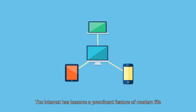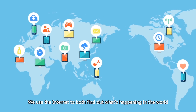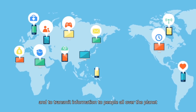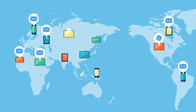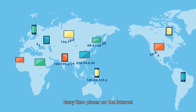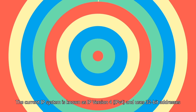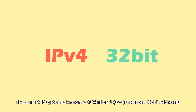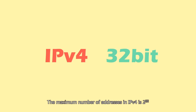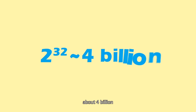The Internet has become a prominent feature of modern life. We use the Internet to both find out what's happening in the world and to transmit information to people all over the planet. Every item placed on the Internet has to have a corresponding Internet protocol address. The current IP system is known as IPv4 and uses 32-bit addresses. The maximum number of addresses in IPv4 is 2 to the 32nd, about 4 billion.